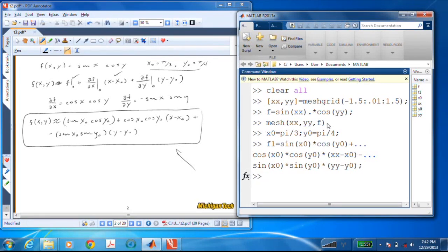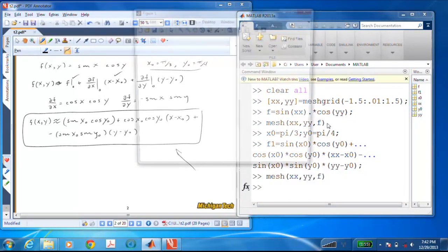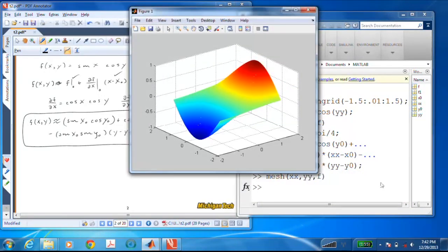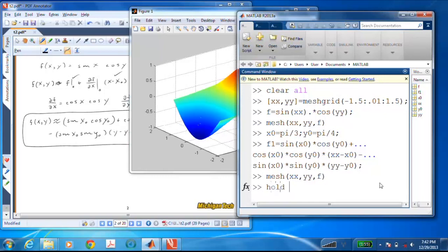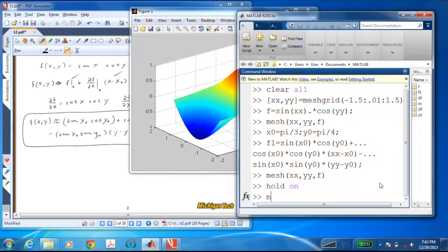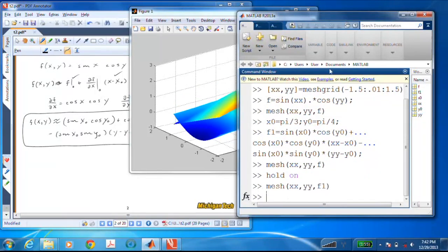And hopefully I didn't make too many mistakes, and we'll find out in just a minute. So let me go ahead and re-plot this one, and then come back here, and I'll use the old handy 'hold on,' and plot xx, yy, and f1. So here comes our linear version.